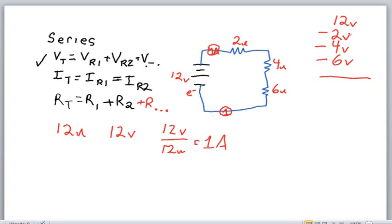And so if I were to do my math and I look at what I have, 12 volts, minus two, minus four, and minus six, I have used all of the voltage in order to get one amp of current to flow through the circuit.